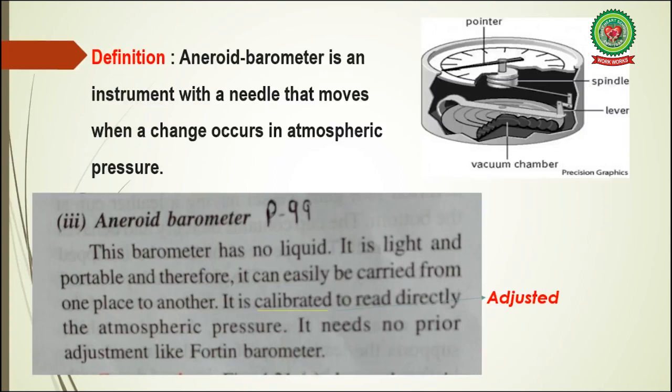Now open your book on page number 99. This barometer has no liquid. It is light and portable, and therefore it can easily be carried from one place to another. It is calibrated — calibrated means adjusted — so it is calibrated to read directly the atmospheric pressure. It needs no prior adjustment like a Fortin barometer.